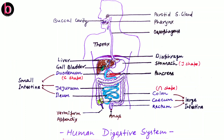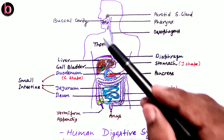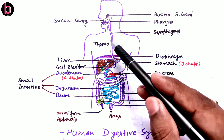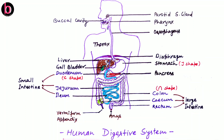In this video lecture we will discuss the human digestive system. There are broadly two parts: the first is the alimentary canal, also known as the gastrointestinal tract or GIT. It starts from the opening of the mouth and terminates at the opening of the anus. Its length is nearly 6 to 9 meters, which is variable because of the length of the human body.